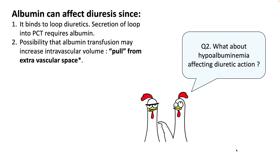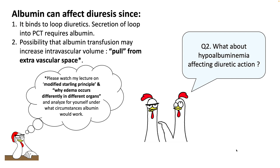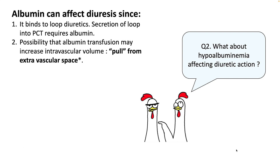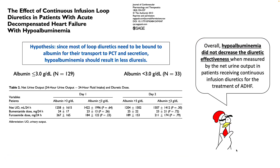Albumin can affect diuresis since it binds to loop diuretics and their secretion into the PCT requires albumin. Some physicians argue that giving albumin transfusion may increase intravascular volume by pulling from extravascular space. Please watch my earlier lectures on the modified Starling principle and why edema occurs differently in different organs for better insight into how edema forms.